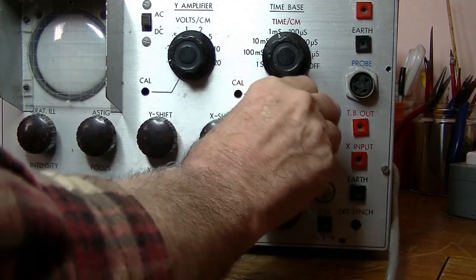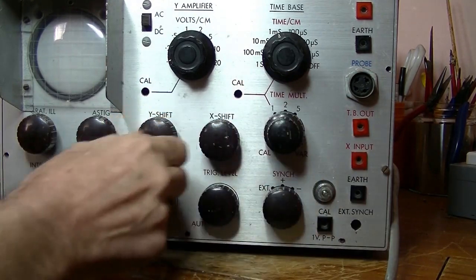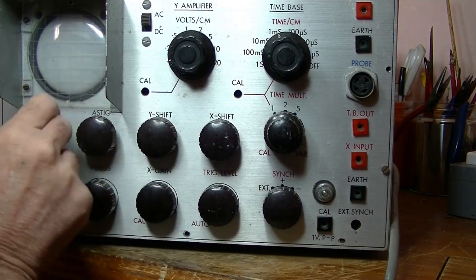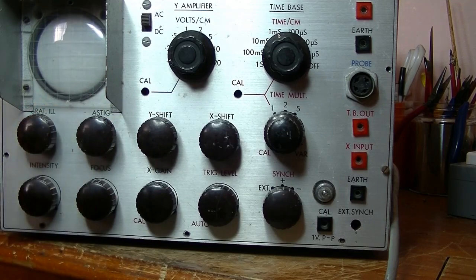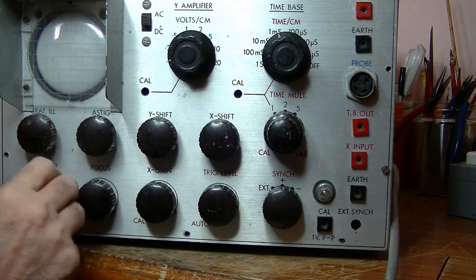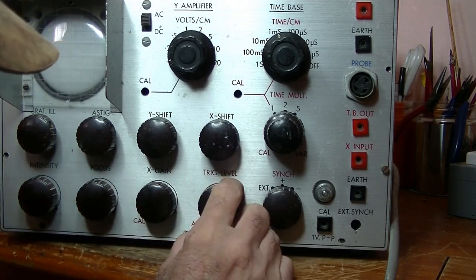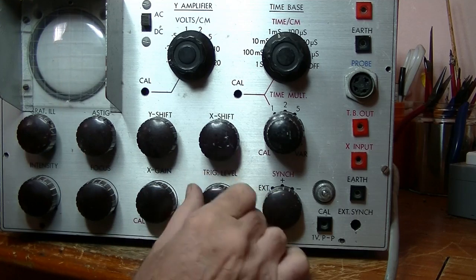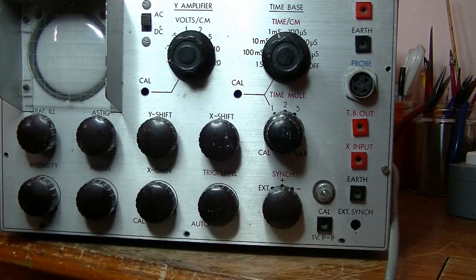And calibration, X shift, Y shift, astig - what's that, astigmatism? I don't know. Grat.il, is there a place called Grat in Illinois? I don't know what that does. Intensity, that's obvious, focus, X gain, trigger level, oh yeah, auto, and then you can adjust it, and sync. External, positive and negative.